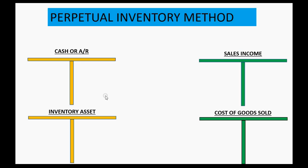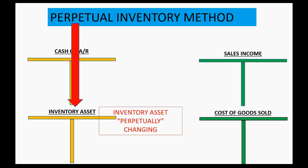The word perpetual means continuously changing. That means if we're using the perpetual inventory method to record the sale, the inventory asset account changes after each transaction — that means it changes after we buy the merchandise and it also changes after we sell the merchandise.